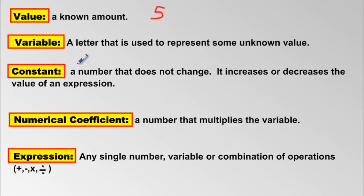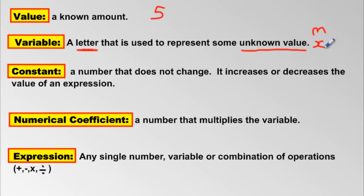A variable is the exact opposite. Let's say I'm holding some marbles in my hand and I'm not telling you what they are — I'm keeping them secret. I know how many there are, but you have no idea. That is an unknown value, and unknown values are called variables. We use letters to represent them. We can use M for mystery or marbles, or X — which is used a lot — or A or W. Pick a letter to represent that mystery amount. That is called a variable.